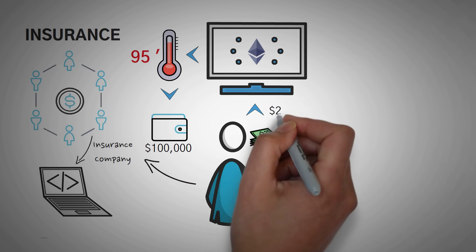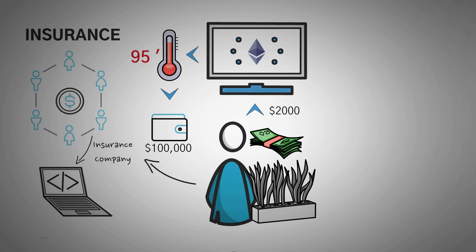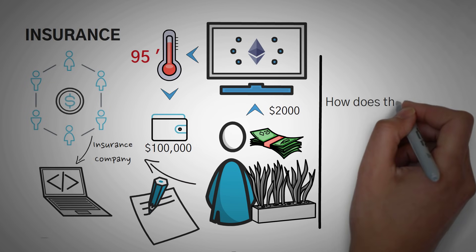However, to start this contract, he has to pay $2,000. So Farmer Joe can buy his crop insurance through what is called a smart contract, which is just code that sees if the conditions are met to pay him. So at this point in time, you might have two questions.